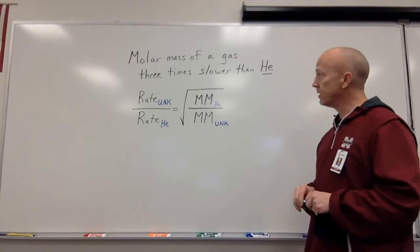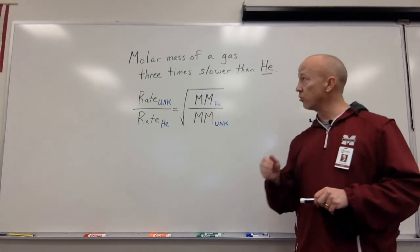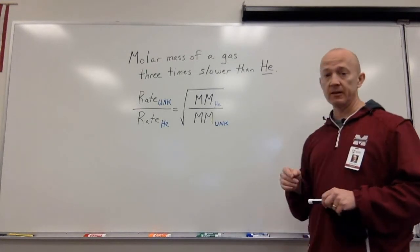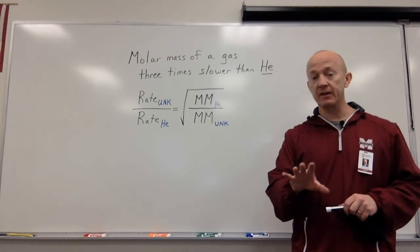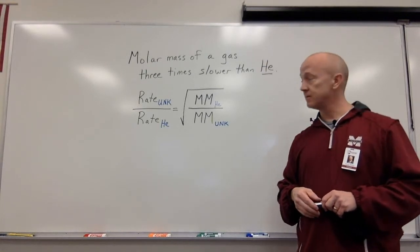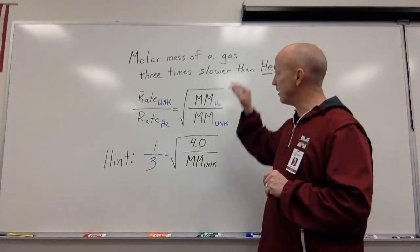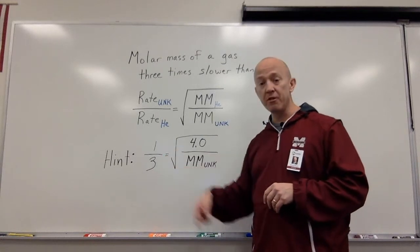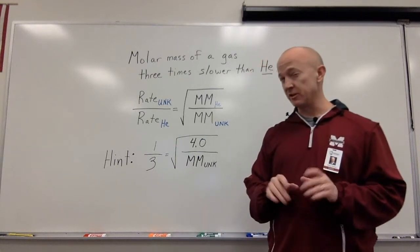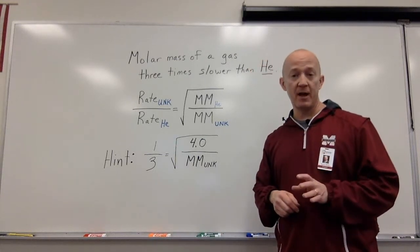Here's a problem for you to do. See if you can find the molar mass of a gas that's three times slower than helium. You're not identifying the gas, you're just finding the number, the molar mass of that gas. Here's a hint for you. If the unknown is slower, that means it's one-third the speed of helium. So, this setup may help you just a little bit. When you find the amount for the molar mass, just put your answer in the LMS.